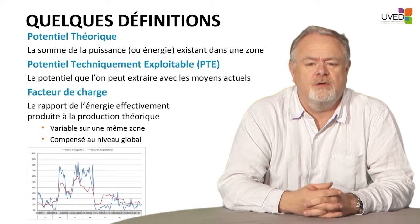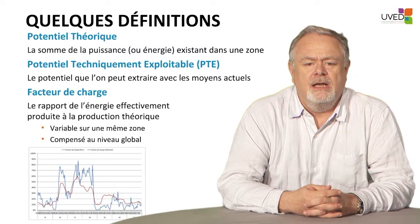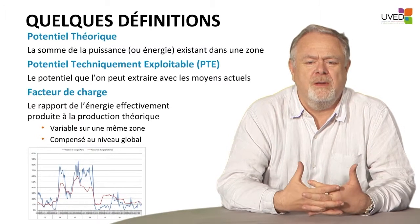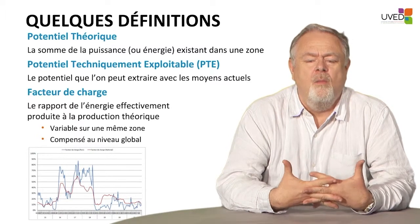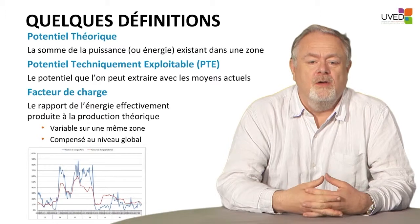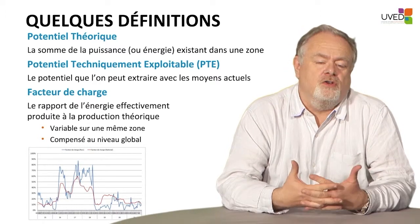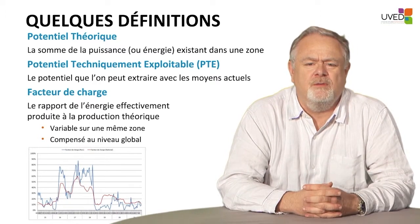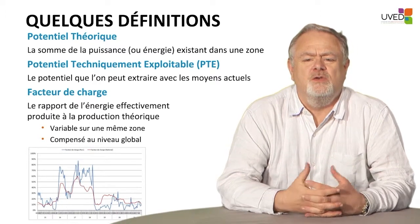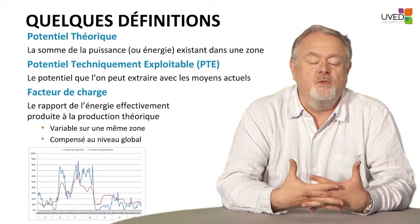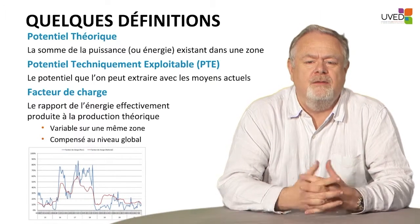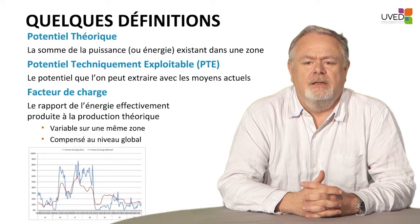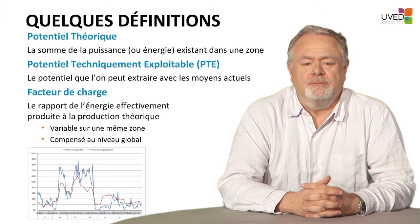Systems can run under speed, some can run over speed, and some can run at rated speed. So the load factor can also be expressed as an average over a given period. Very often, people talk about the load factor over one year — the average production of a given plant over one year.